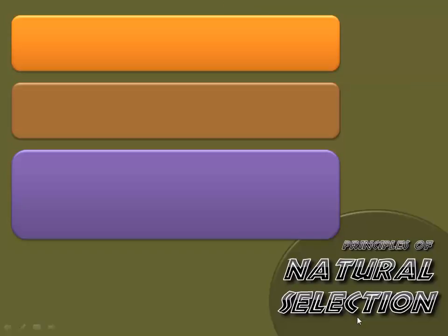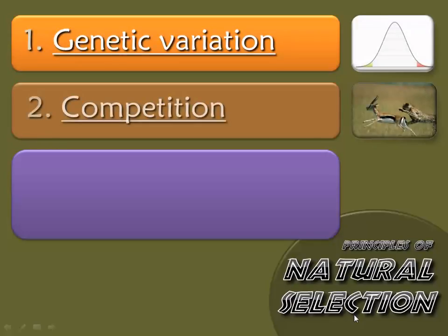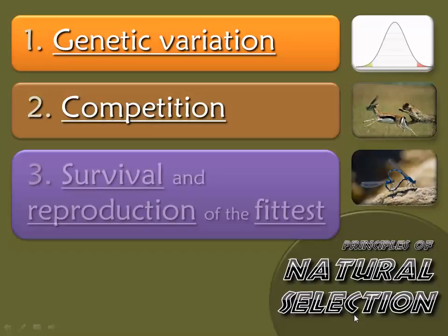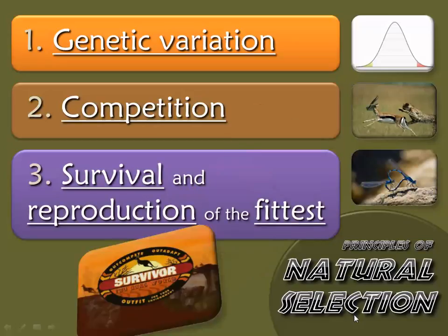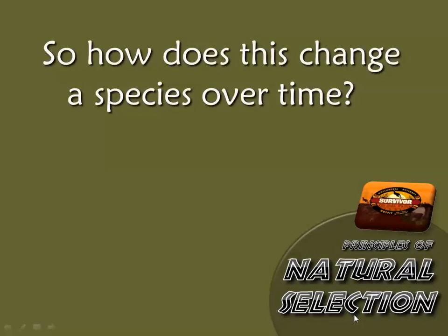Welcome back to the G Lab. Last time we left, we were talking about the things that natural selection needs in order to work. You need genetic variation, you need some competition, so you've got winners and losers. The winners are the ones that are able to survive and then reproduce — the ones we consider the fittest, most fit for their environment. So how does this actually change species over time?